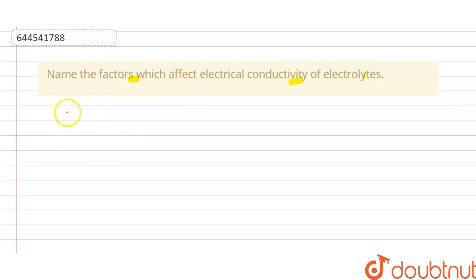So we have to give the factors here. So the solution of this question is, we can write here, factors affecting conductivity of electrolytes.